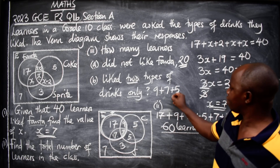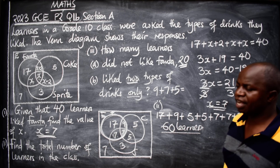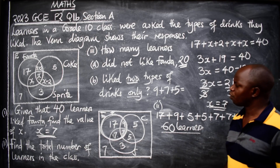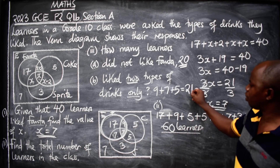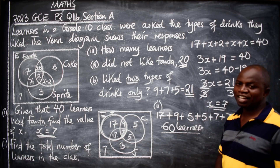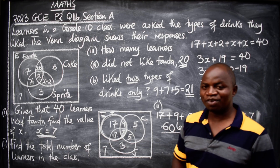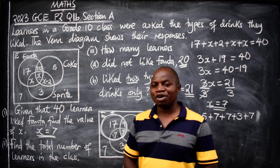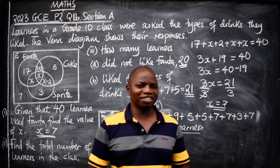Adding the values in the regions where exactly two drinks overlap — 9 plus 5 plus 7 — when we add everything we get 21. So 21 learners liked exactly two types of drinks. This is the way the question was supposed to be answered.